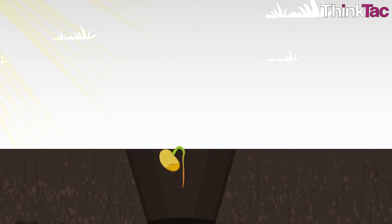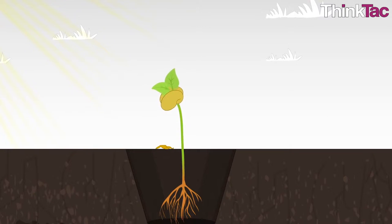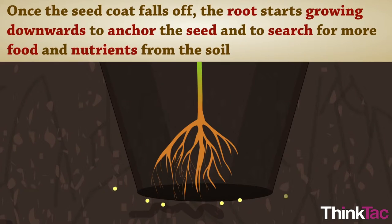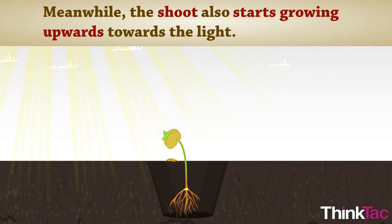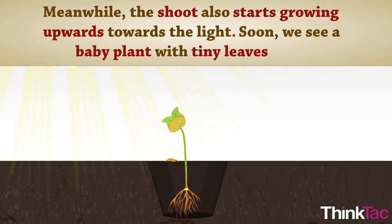The third stage is growth. Germination is followed by a rapid growth phase where the root and the stem grow in size and leaves appear. The leaves start preparing food in the presence of light by a process known as photosynthesis. The roots go deeper in the soil and absorb water and minerals. The stem elongates and bears more leaves, and eventually flowers appear on the plant.